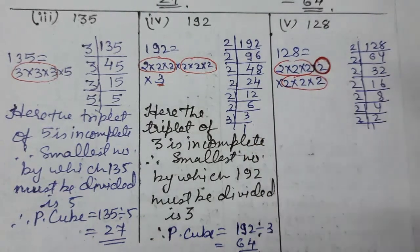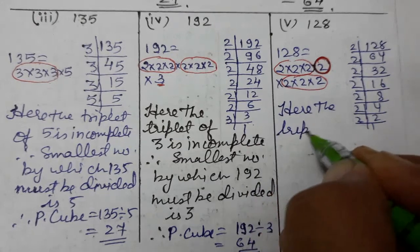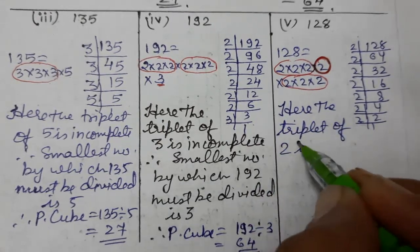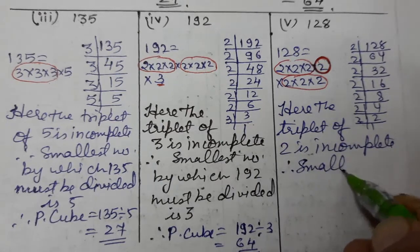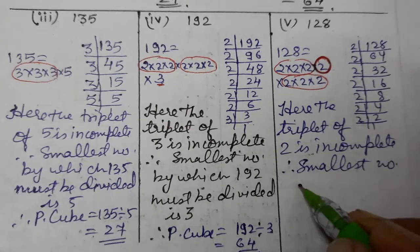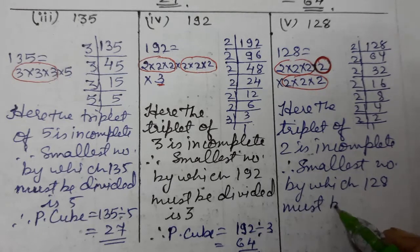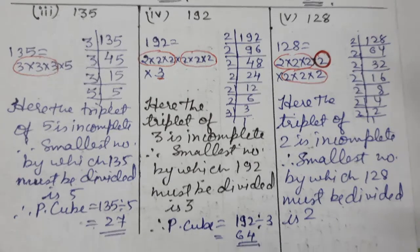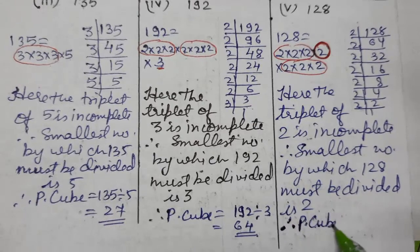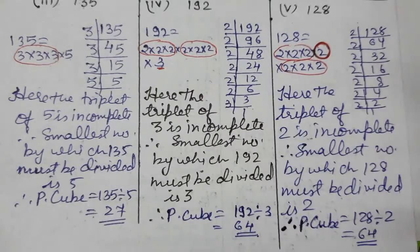That 2 is alone. The triplet of 2 is incomplete, therefore the smallest number by which 128 must be divided is 2. The step is the same for every question. The perfect cube is 128 divided by 2, which gives 64. So children, question number 3 is complete. I hope you understood — thank you so much for watching the video.